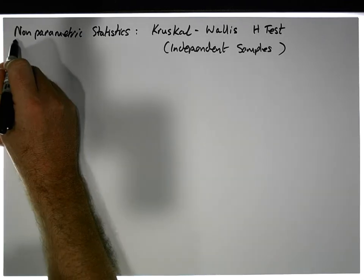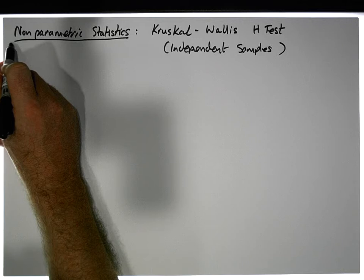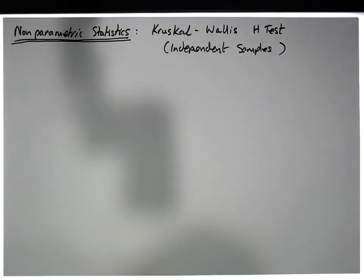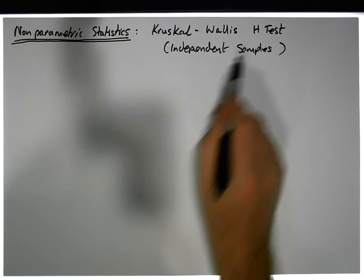In this short video, another video in our series dealing with non-parametric statistics, we're going to concentrate on the Kruskal-Wallis H test, which is an independent samples test where we've got more than two samples that we want to compare to see whether there's evidence of differences across the samples or between the samples.